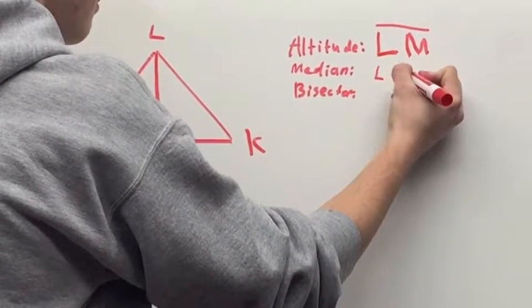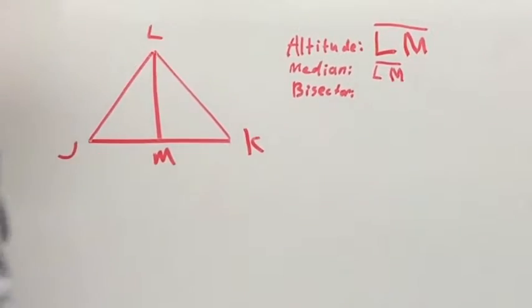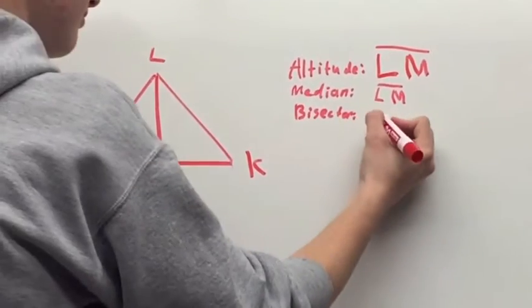A median of a triangle is a segment with endpoints being a vertex of a triangle and the midpoint of the opposite side.